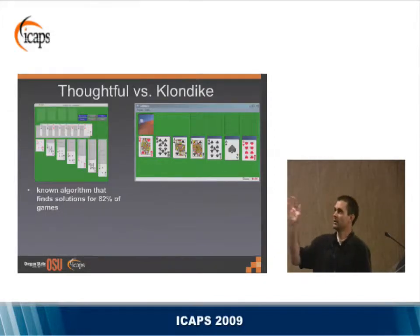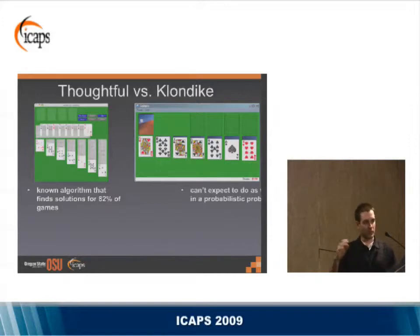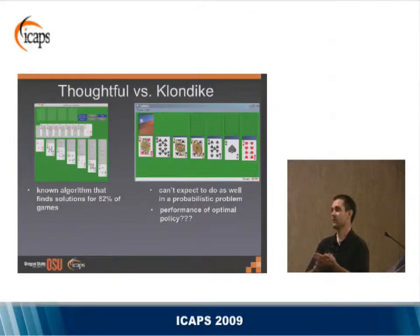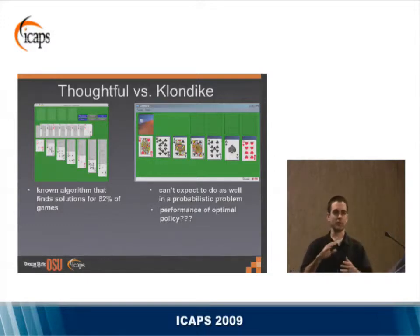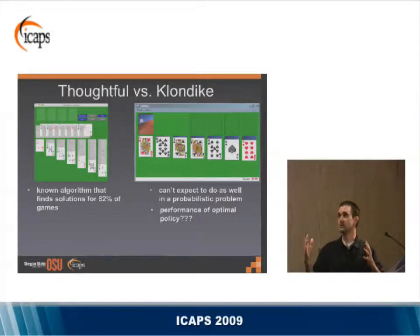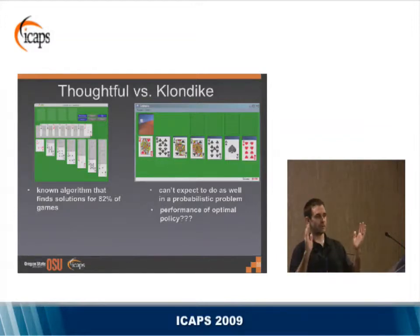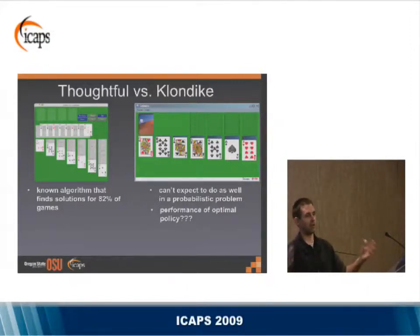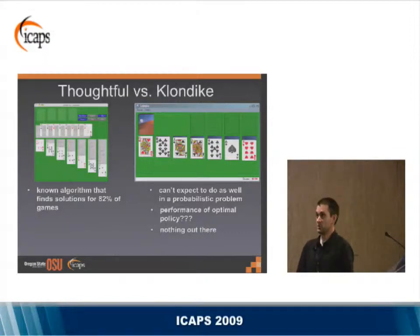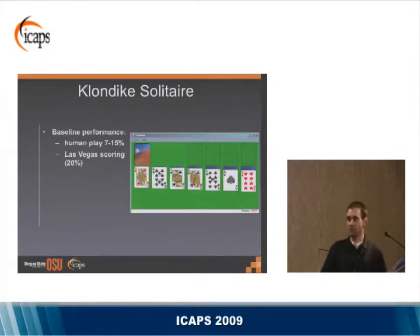So what do we know about Thoughtful versus Klondike? For Thoughtful, there's an algorithm that can win 82% of games. For Klondike, we can't expect to do as well — we don't get to see where the cards are. What we're really interested in is just taking the first step and asking: what can we say about the bounds of an optimal policy in Klondike? I spent a lot of time scouring the Internet for anyone who said anything about Klondike win rates — some random person who played 1,000 games, or a simple program that won X percent — and really found nothing, which utterly surprised me.